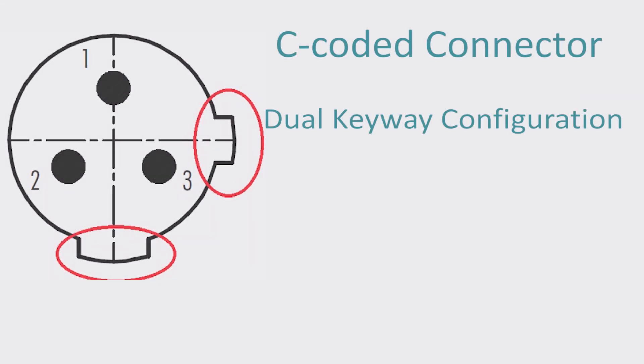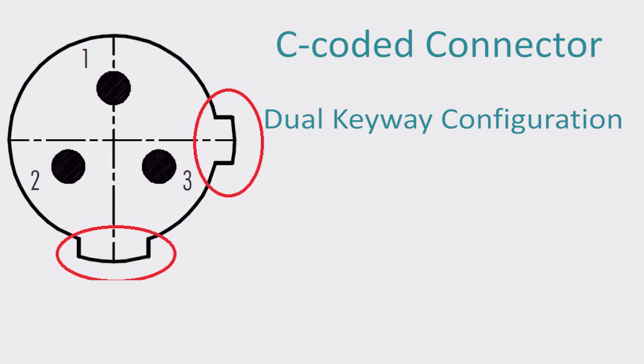The dual keyway configuration acts as a precautionary measure to prevent you from misconnecting your components. This code type is most heavily used in applications involving AC sensors and actuators, and it comes in anywhere between 3 to 6 pin connections.